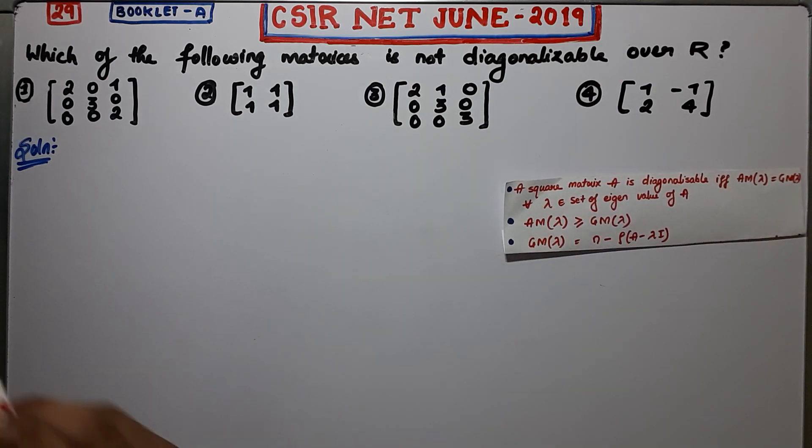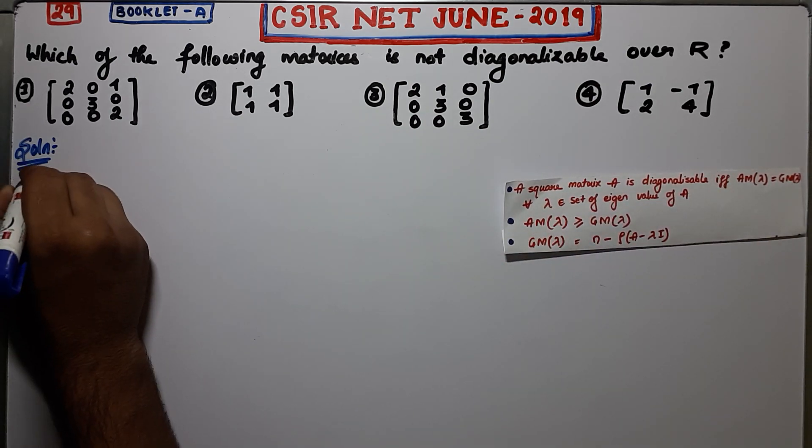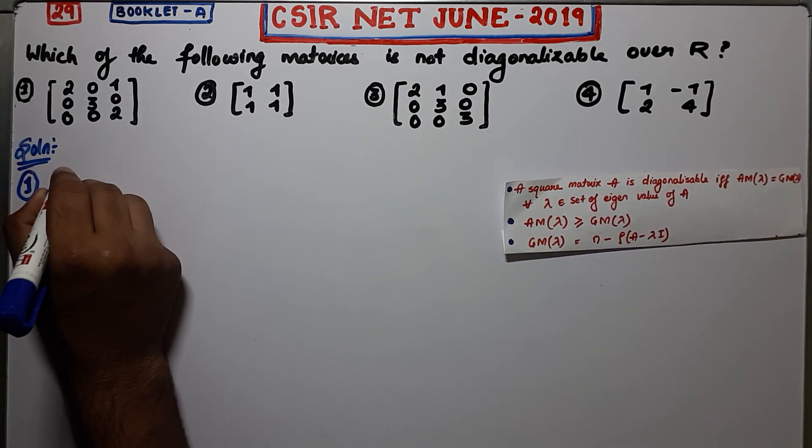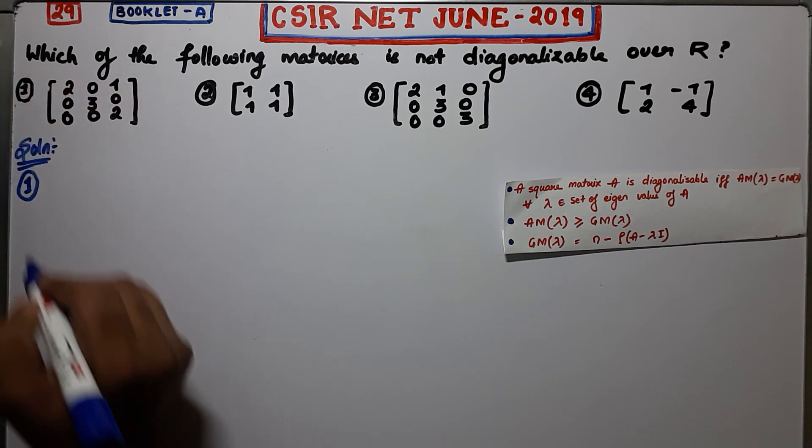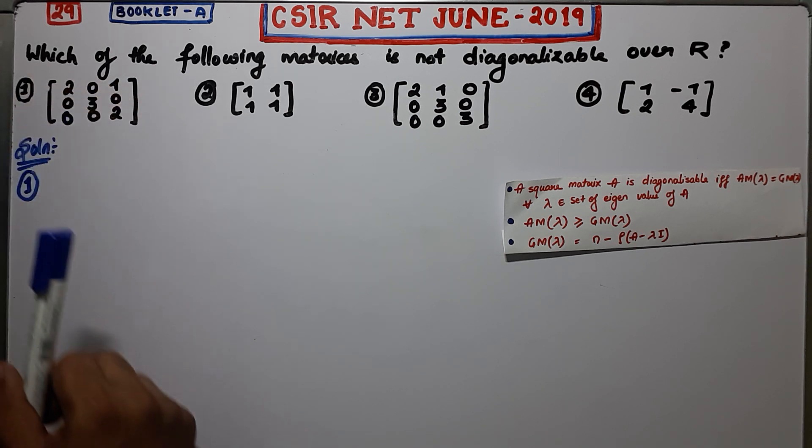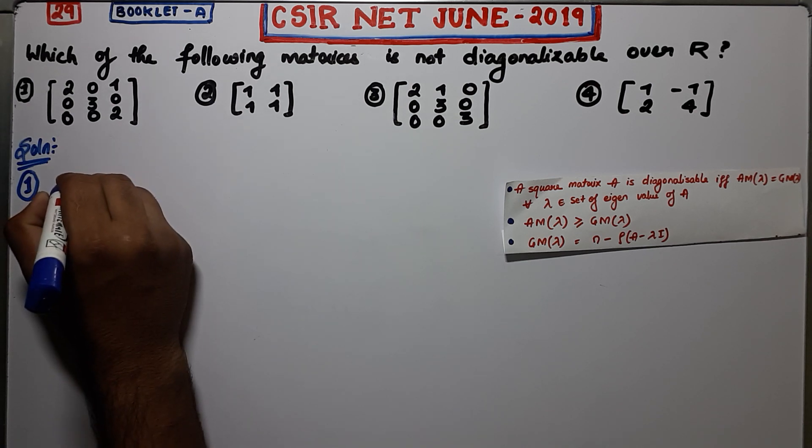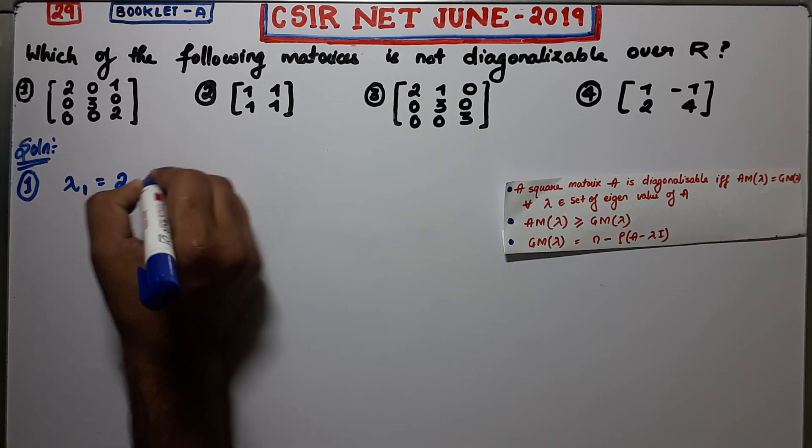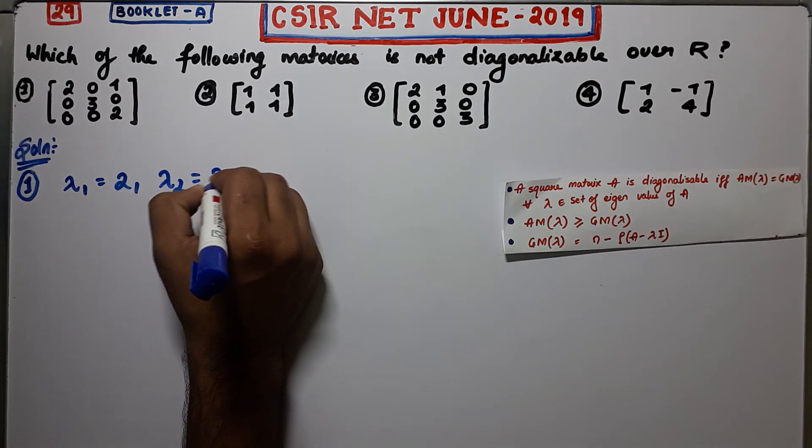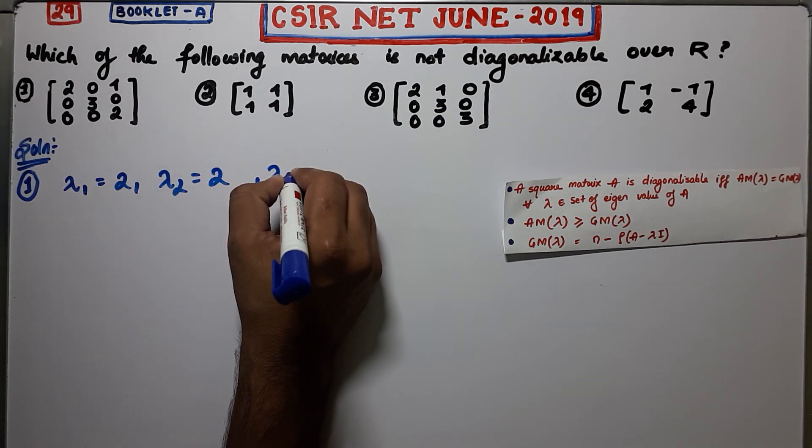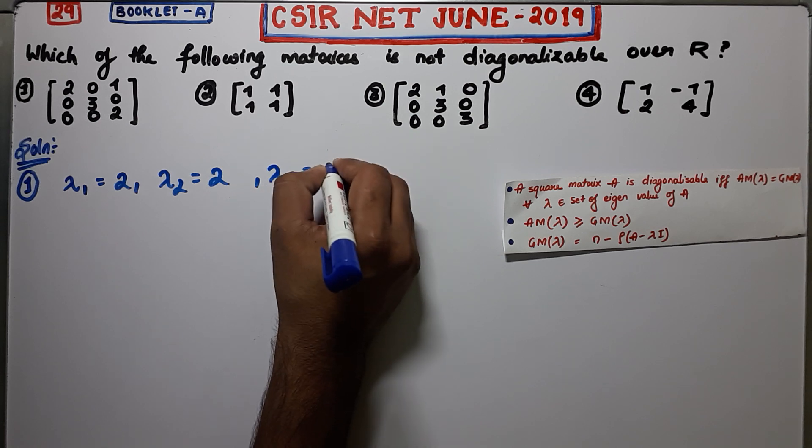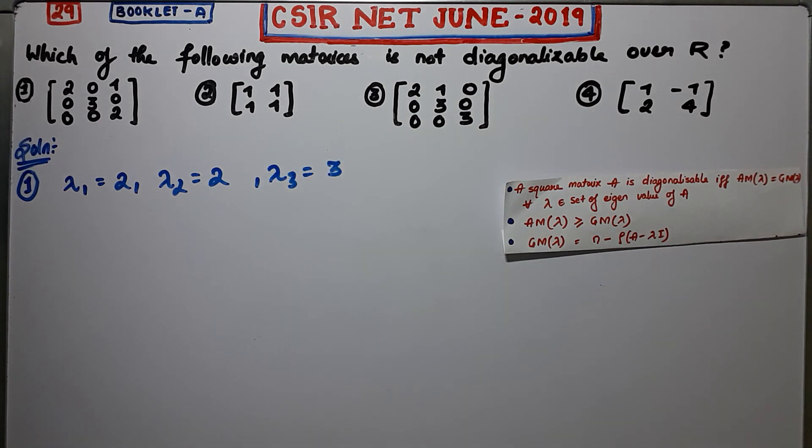Let us firstly see your first option. Your first option is actually a triangular matrix. Since it is a triangular matrix, all the eigenvalues are its diagonal elements. From this you can conclude that λ₁ = 2, λ₂ = 2, and λ₃ = 3.